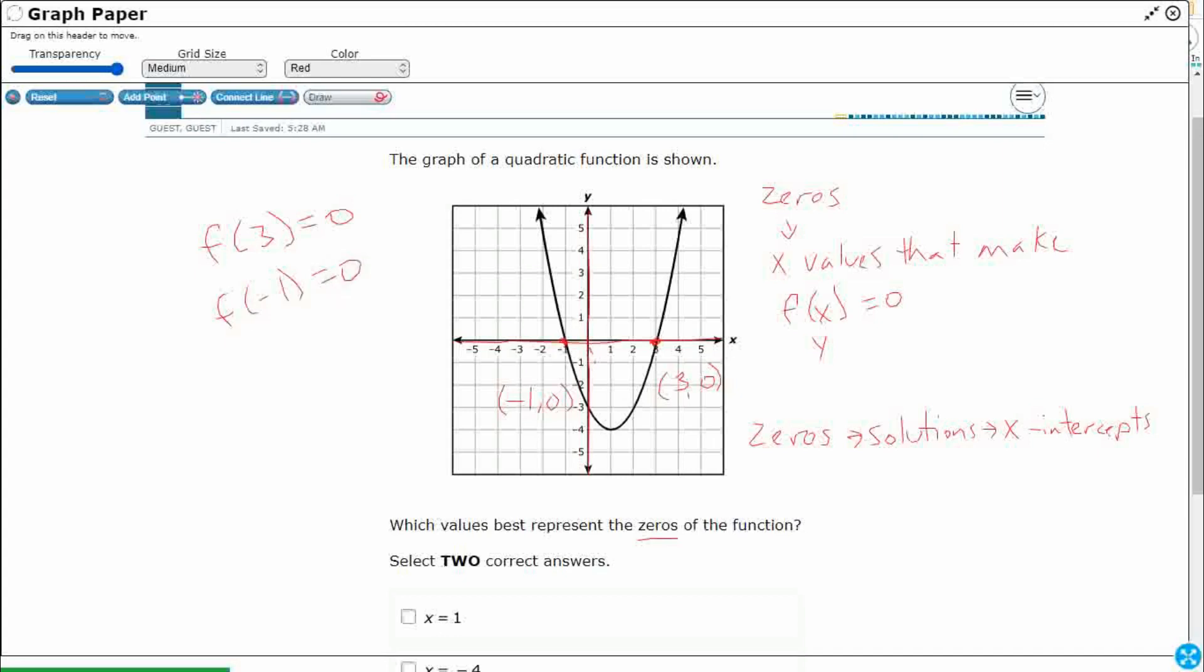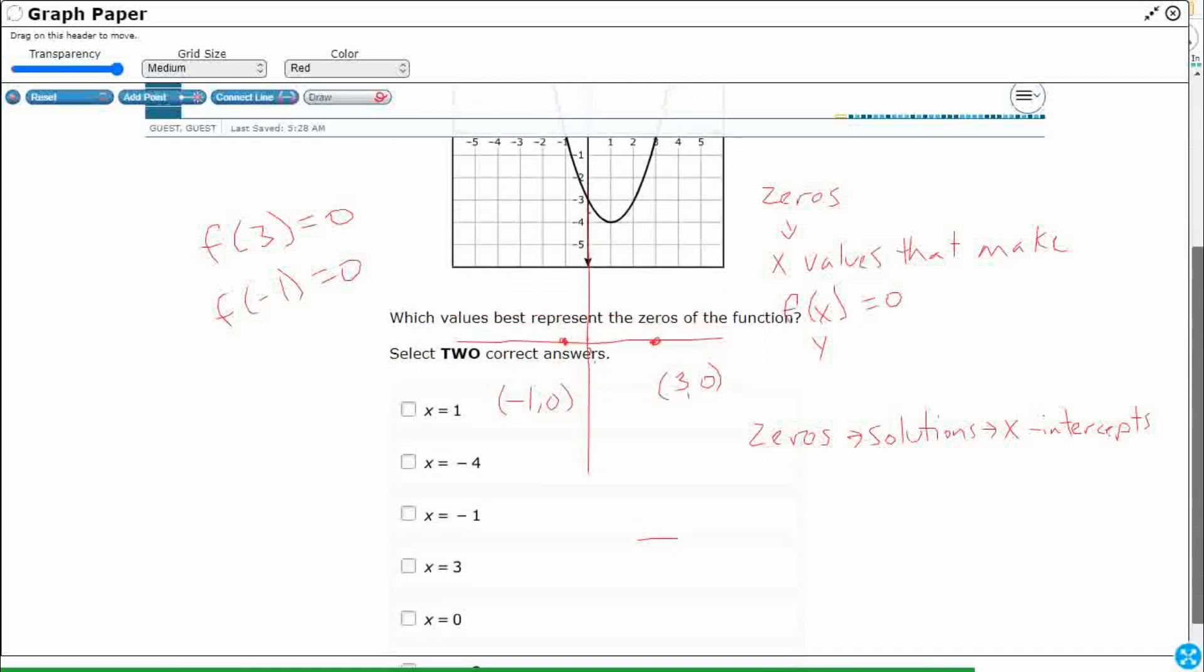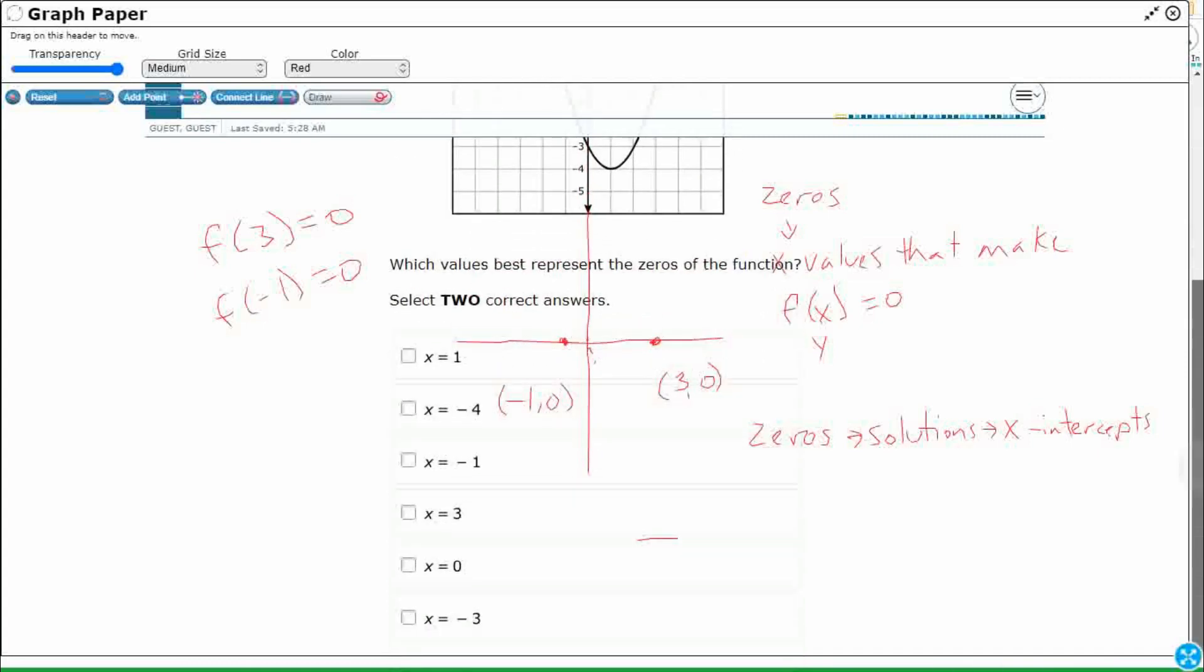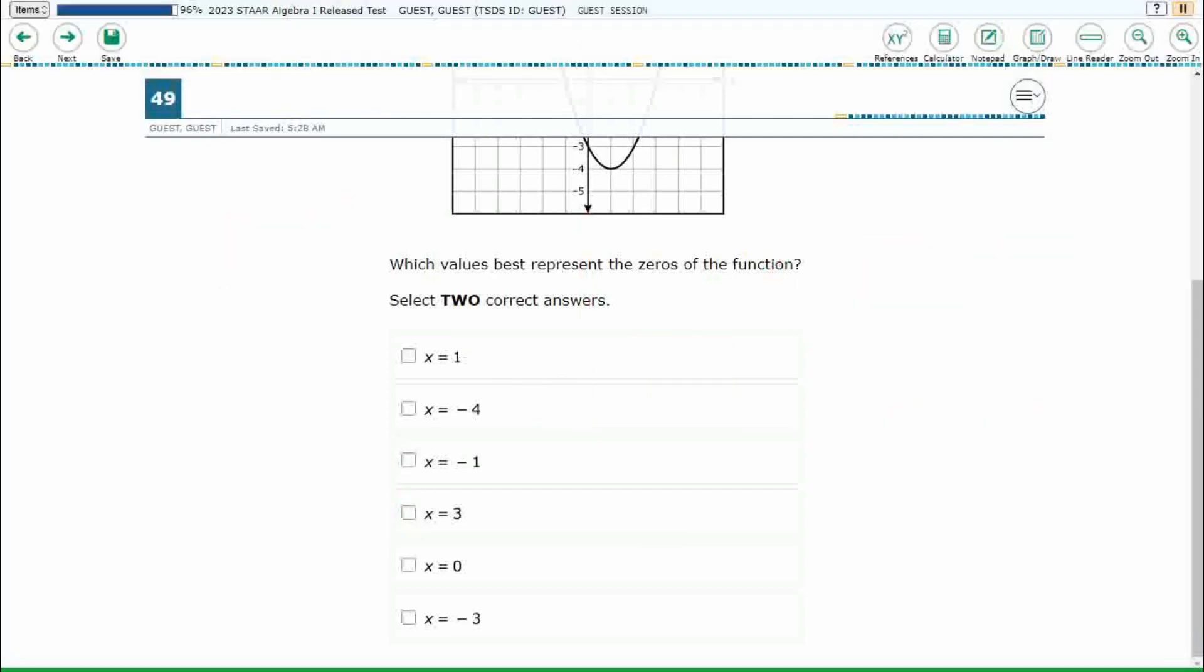Take a look at your answer selections down here. They're just going to give you the x value. They don't want the ordered pair because they know for every single one of these, it is going to be the y of zero. So look what I've got here. I've got an f of three and an f of negative one. So I'm going to hit this one right here. I'm going to hit this one right here. And we need to go ahead and bubble it in. So we'll say x equals three, x equals negative one, two points. And those two selections are the correct answers for this problem.